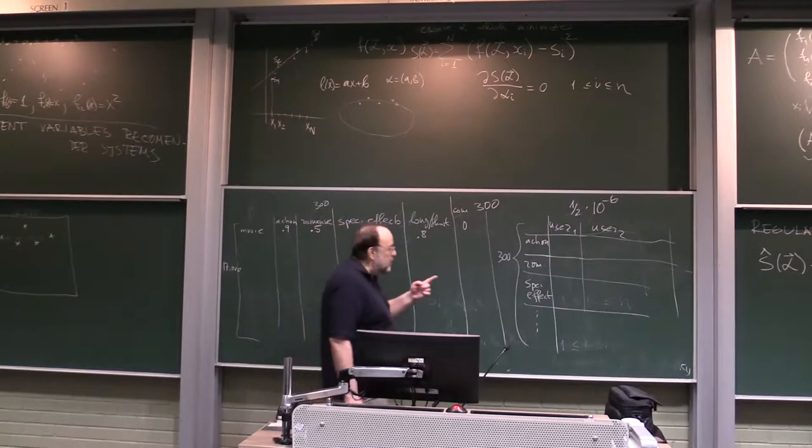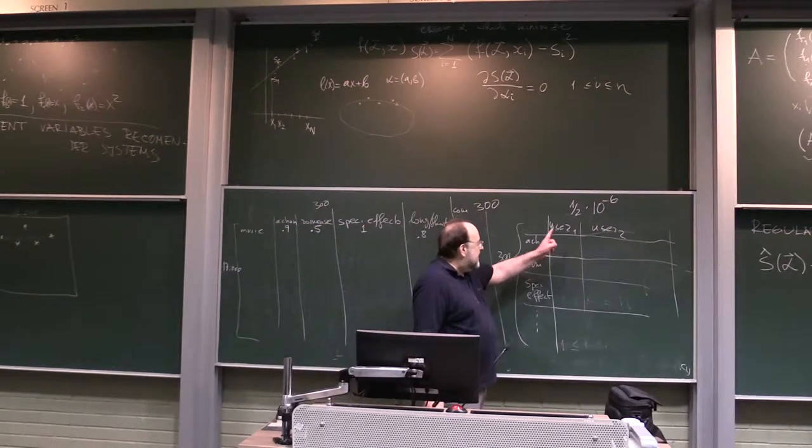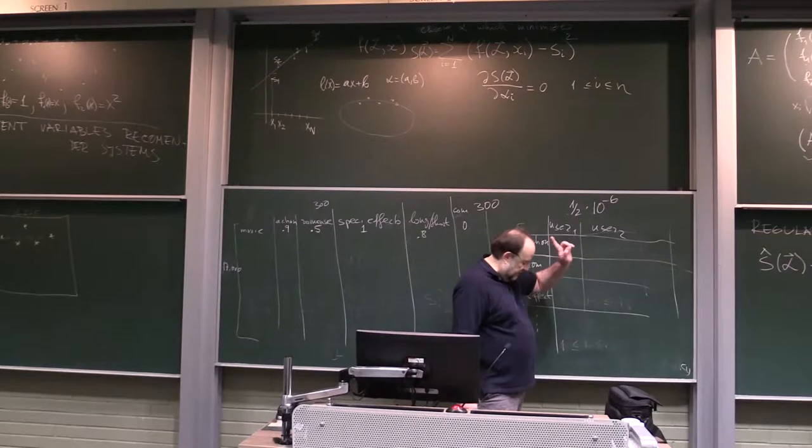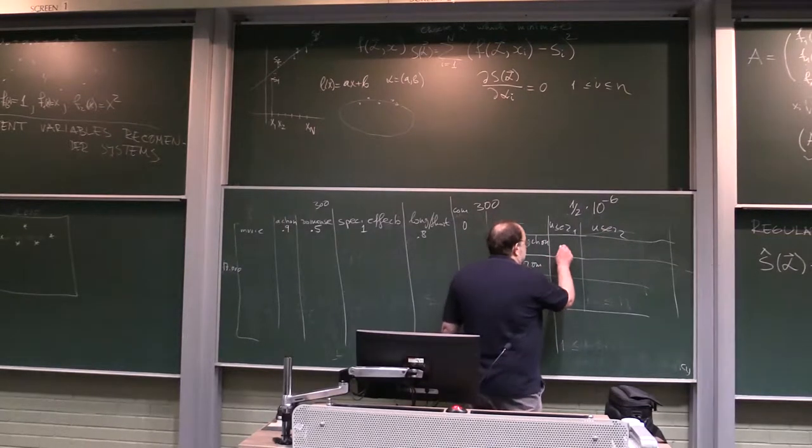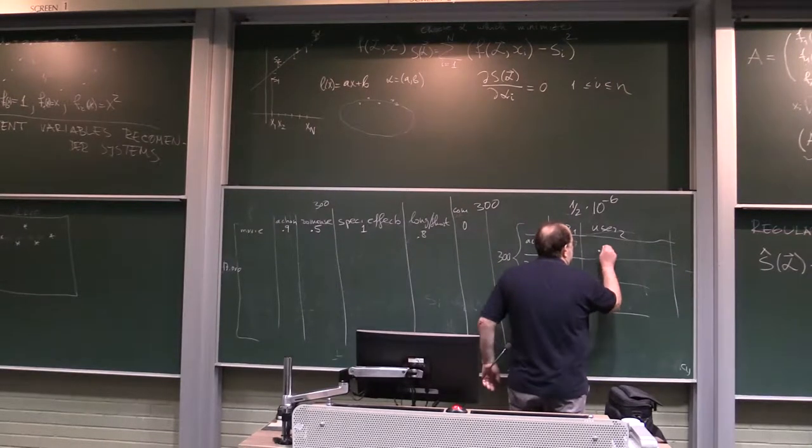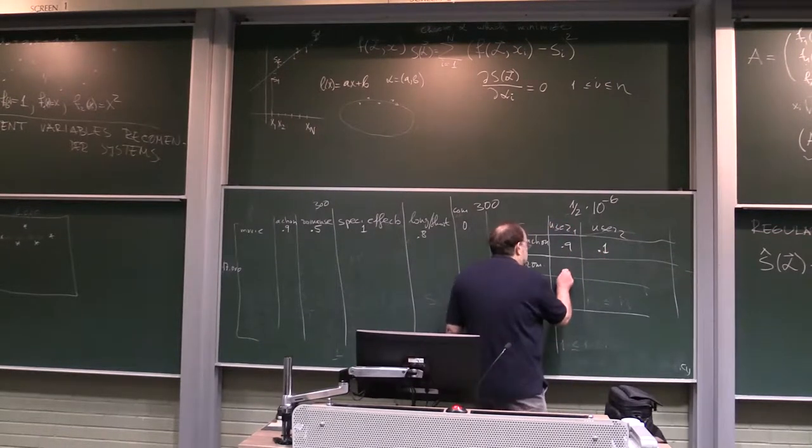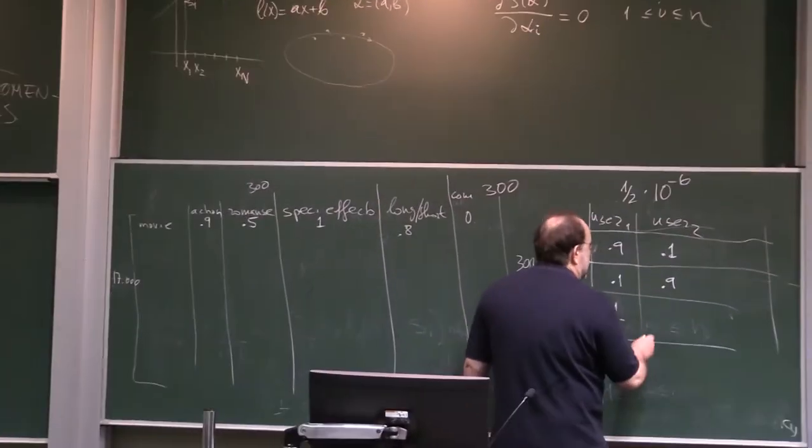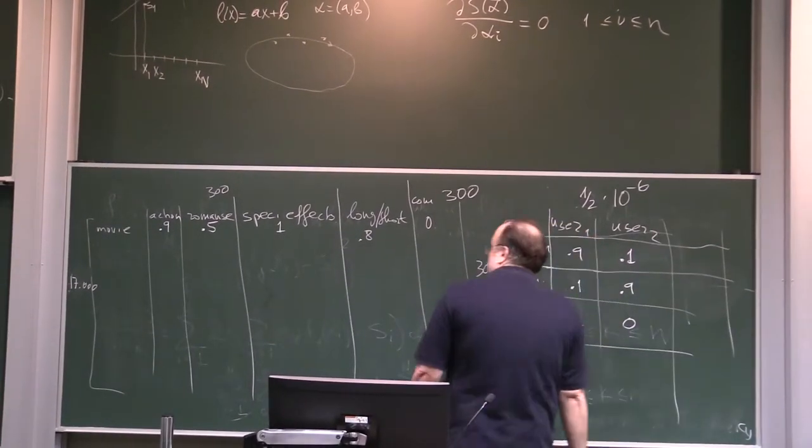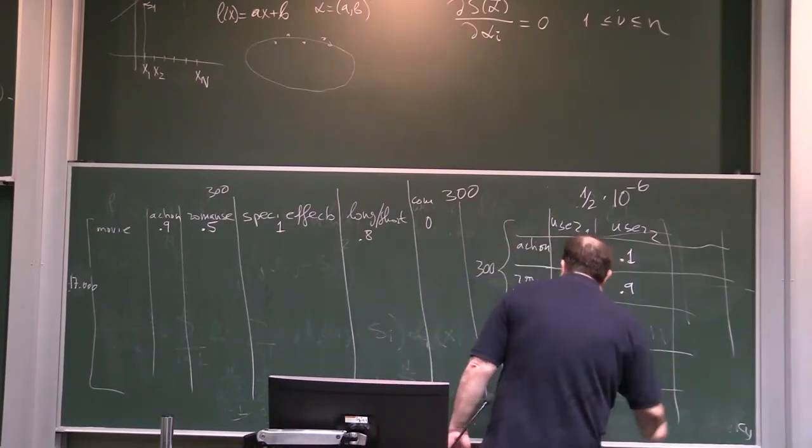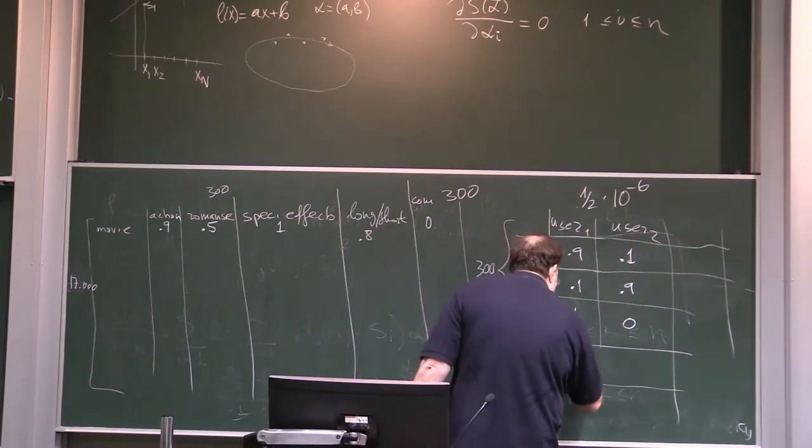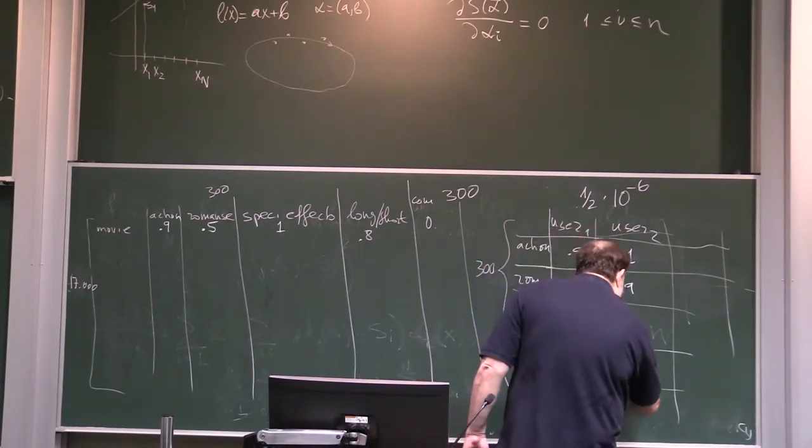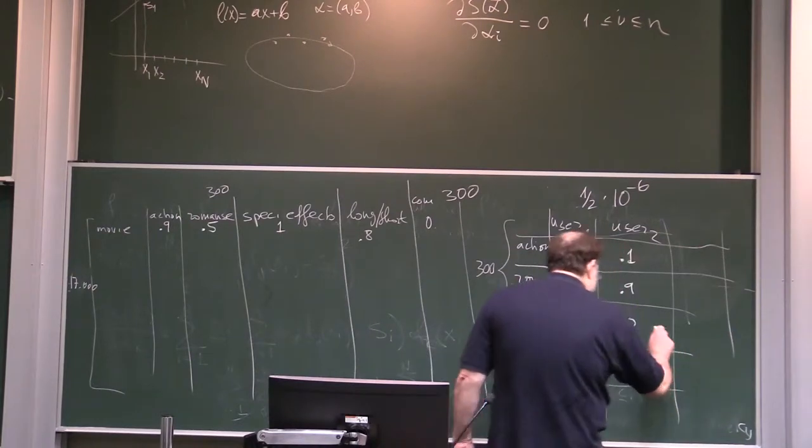So, now, what would you put here? Say, here, user number 1 is me, myself, and user number 2 is my wife. So, action movie, I give it 0.9, my wife gives it 0.1. Romance, I put 0.1, my wife gives it 0.9. Special effect, I give it 1, my wife gives it 0. Then, long and short, I'm impatient, so if its movie is long, I don't like it very much, 0.25, my wife being stingy, she paid the ticket, so she likes long movies, 0.75.